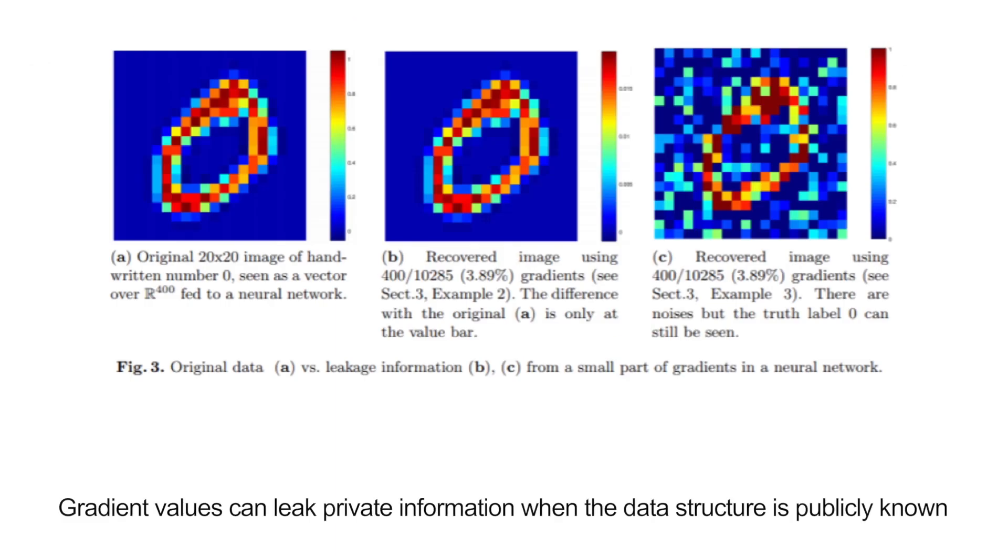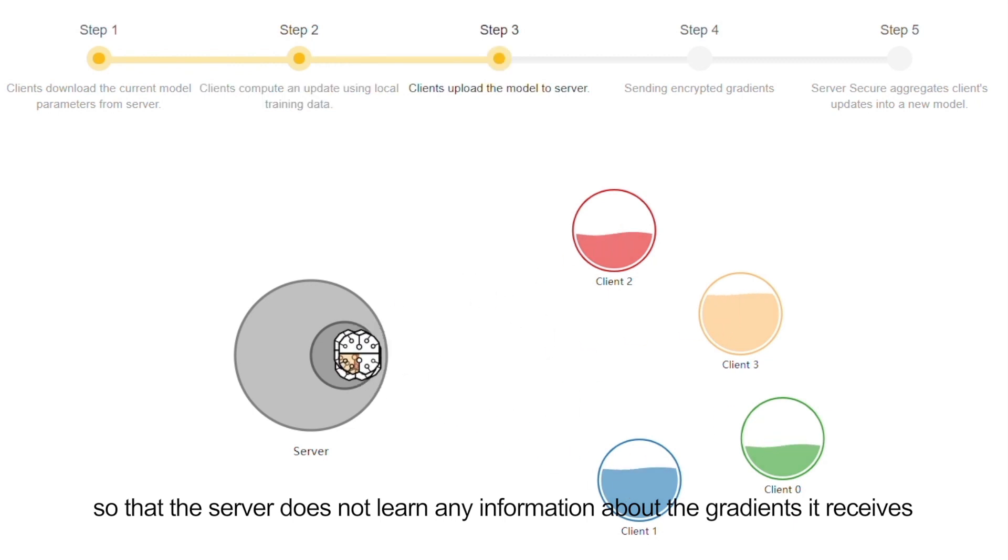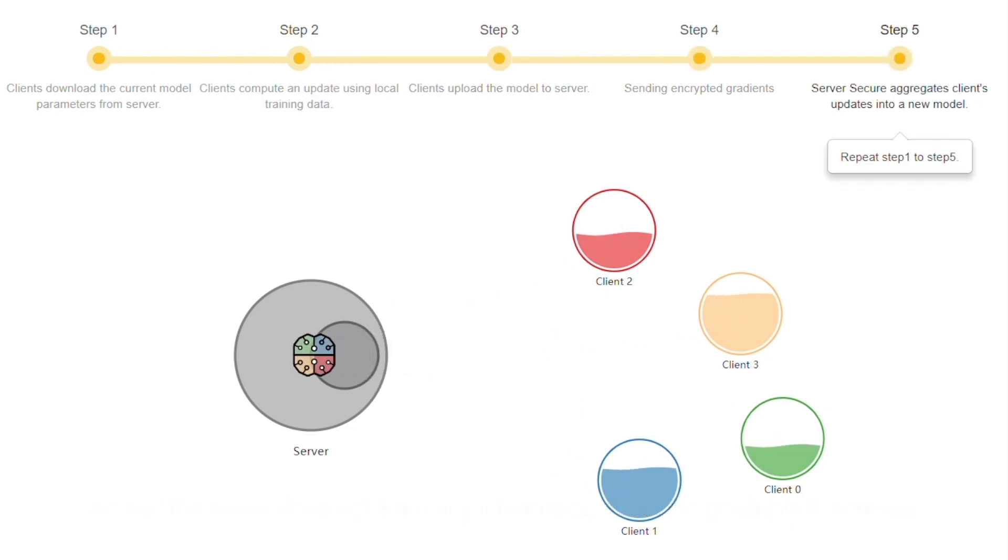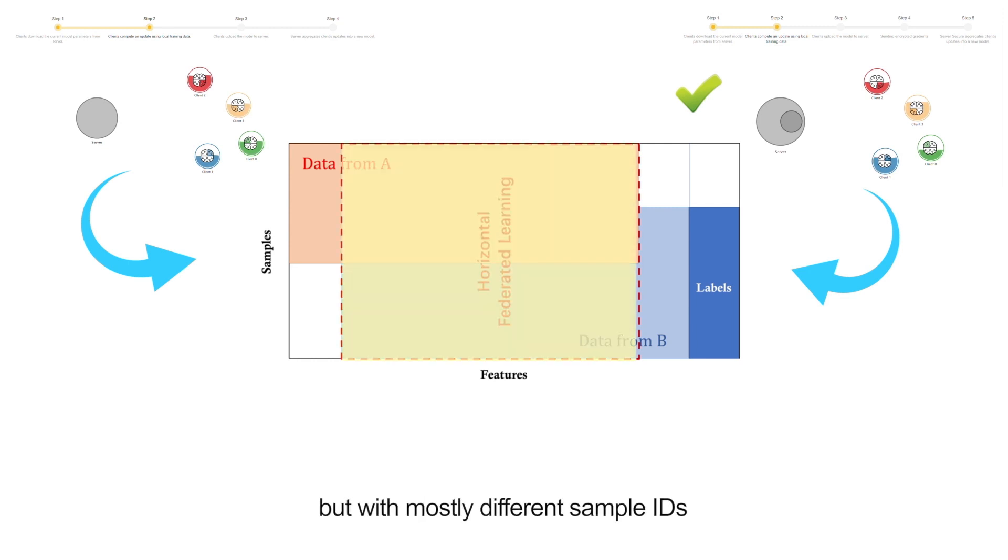Gradient values can leak private information when the data structure is publicly known. To address this issue, we can secure the gradient through techniques such as homomorphic encryption, so that the server does not learn any information about the gradient it receives, while still able to perform model aggregation. Horizontal Federated Learning is suitable when two parties share large overlapping features, but with mostly different sample IDs.